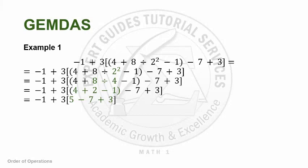4 plus 2 minus 1 gives us 5. And what remains in the brackets is minus 7 plus 3. This is another grouping symbol, so we should perform it first before other operations. Our next equation would be negative 1 plus 3 times 1.